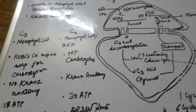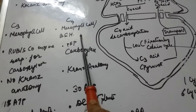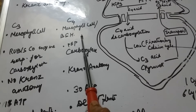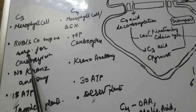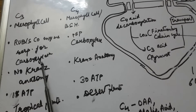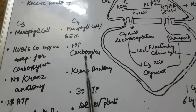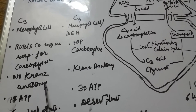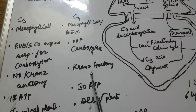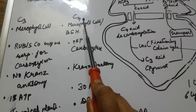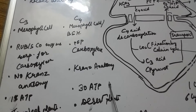Now let us see the difference between the C3 and C4 cycles. The C3 cycle occurs only in mesophyll cells, whereas the C4 cycle occurs in both mesophyll cells and bundle sheath cells. RuBisCO enzyme is responsible for carboxylation in C3 plants. Kranz anatomy is absent in C3 plants but present in C4 plants. C4 cycle generally occurs in plants adapted to arid or desert conditions with higher temperatures.